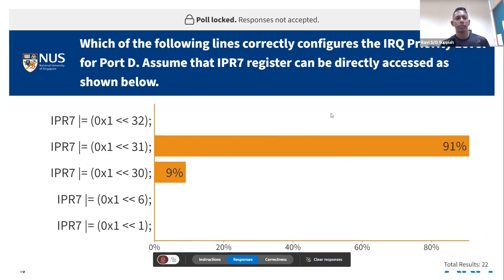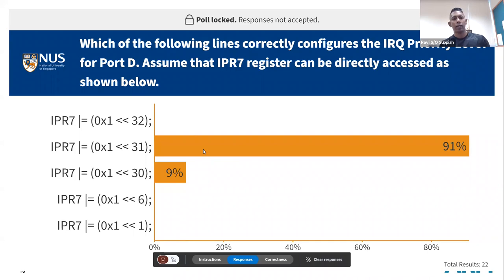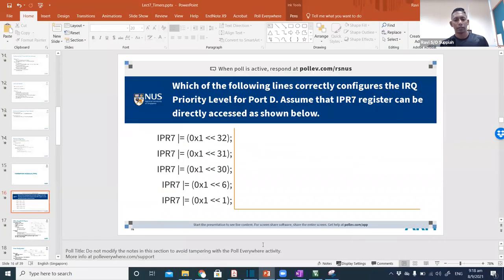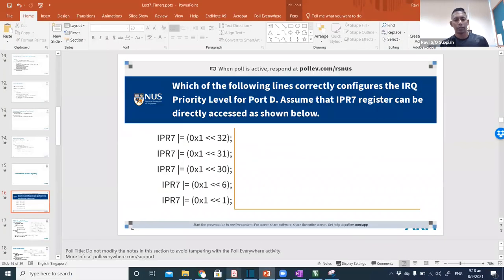Let me stop here. In this question I asked you to configure the IRQ priority level for Port D. I did not specifically say which priority level I want. So if you look at IPR 7, let's open up the data sheet to look at the IPR registers.